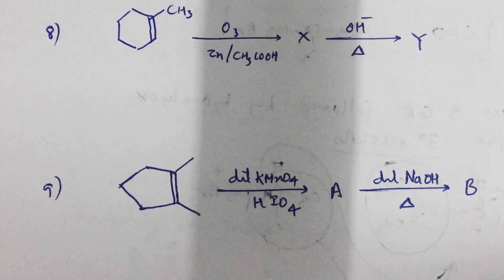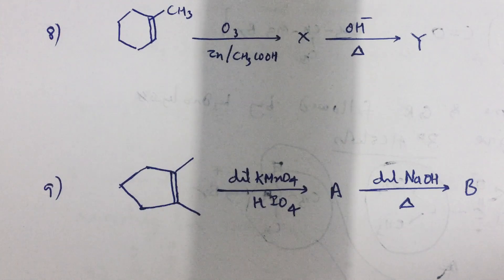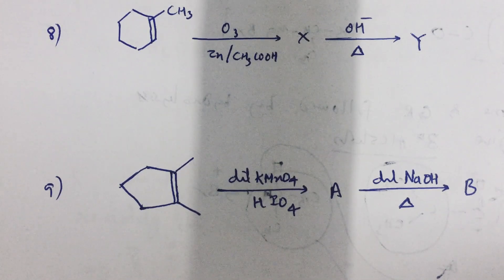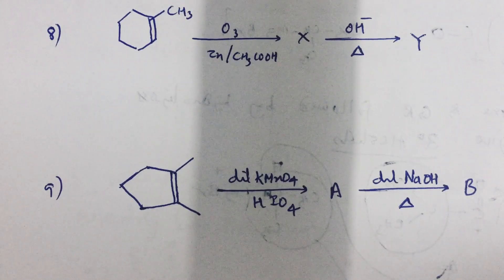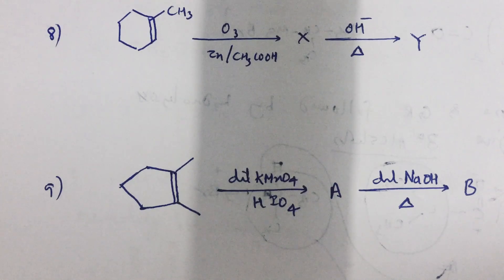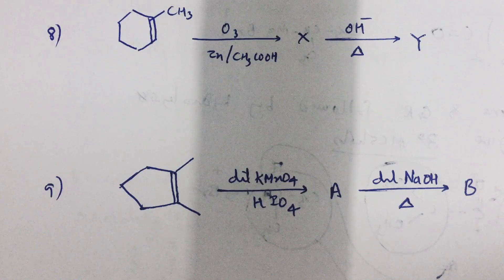We will see one more question and then we arrive. In the ninth question here, this compound on treatment with KMNO4, followed by HIO4. First KMNO4 will add two OH groups across the double bond, breaking the pi bond and giving a cis-diol. That cis-diol on further treatment with HIO4 breaks C-C bond, giving a diketone. That diketone again undergoes an intramolecular aldol condensation to give a product. You try to work it out.